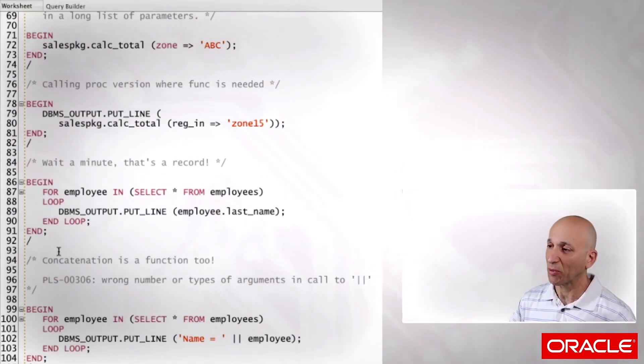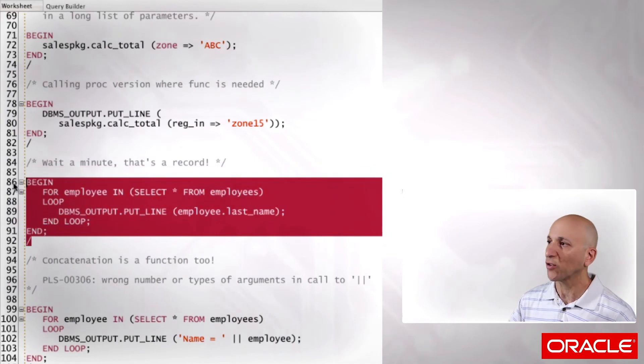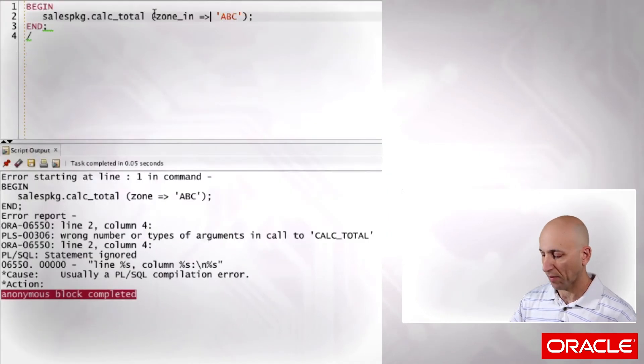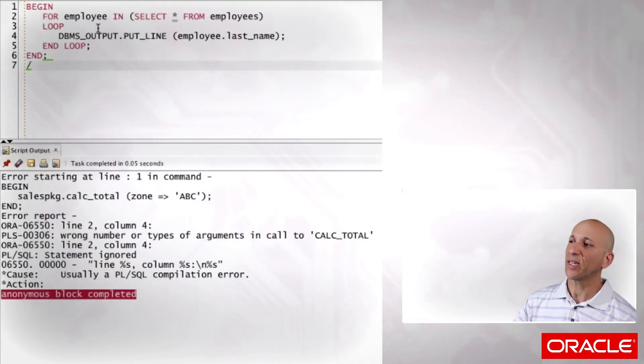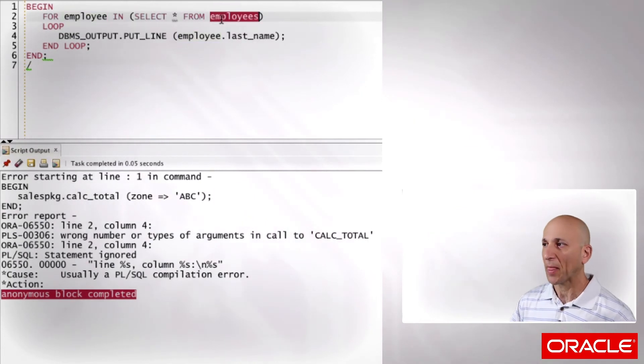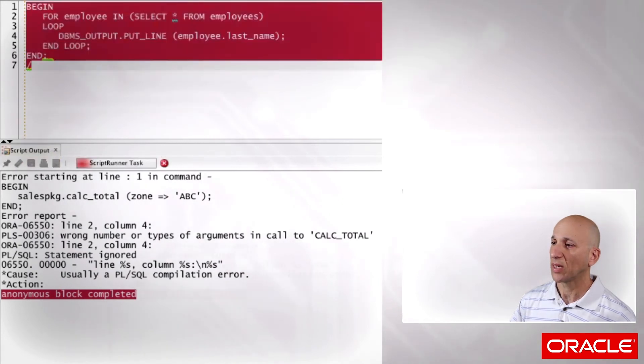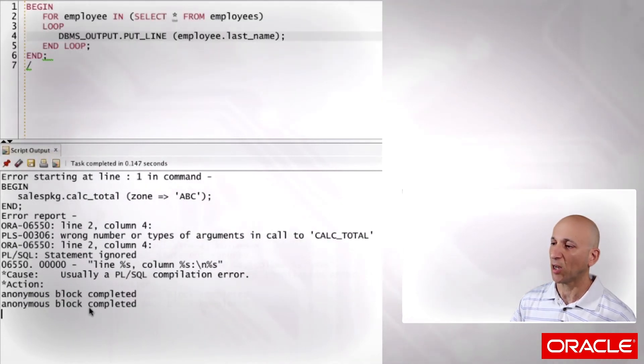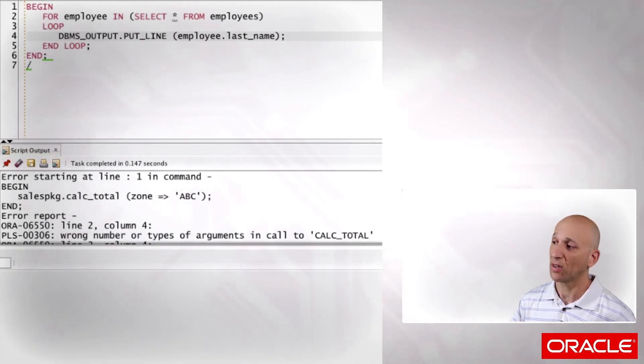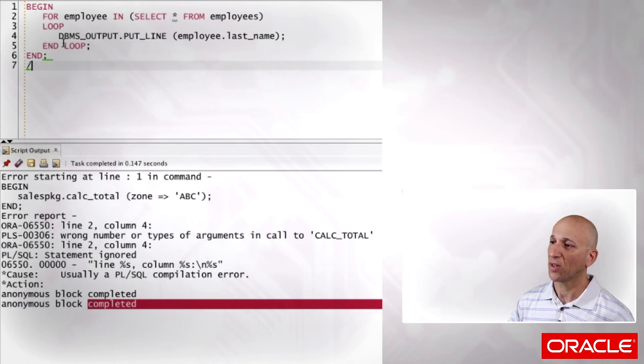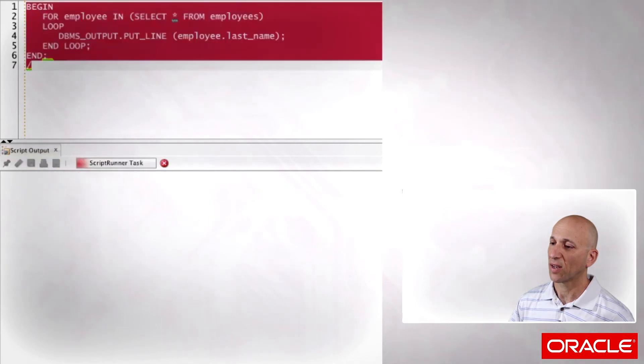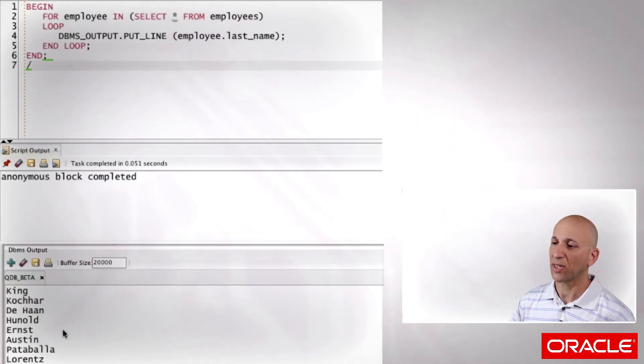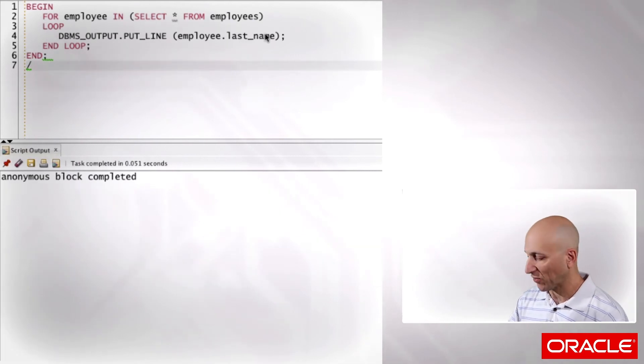And this is an interesting example too. Let's suppose I've got a cursor for loop. So for every employee in this select from the employees table, I'm going to display the employee last name. Let's see if that works. Run my code. Anonymous block completed. If we look at the output, and I turned it on, you see the code. They're all my employees.